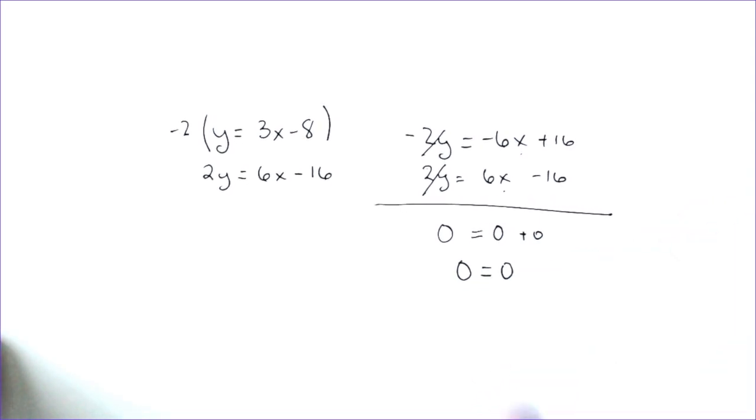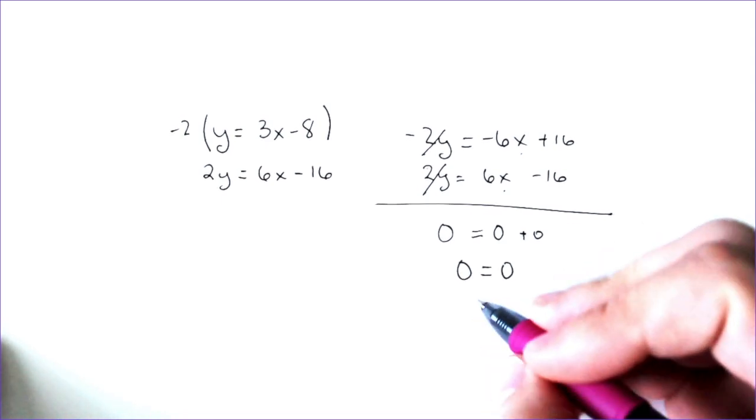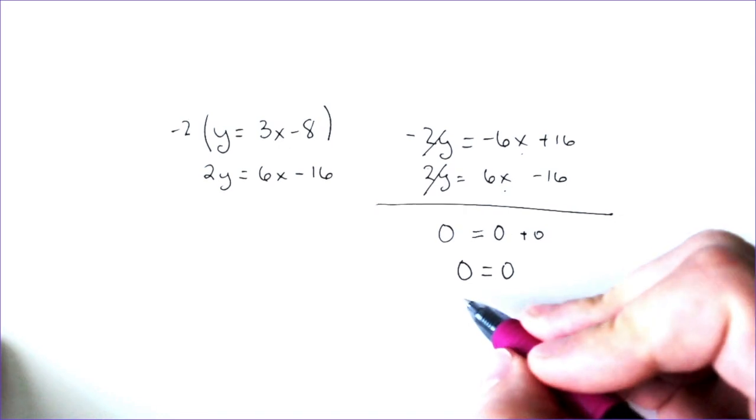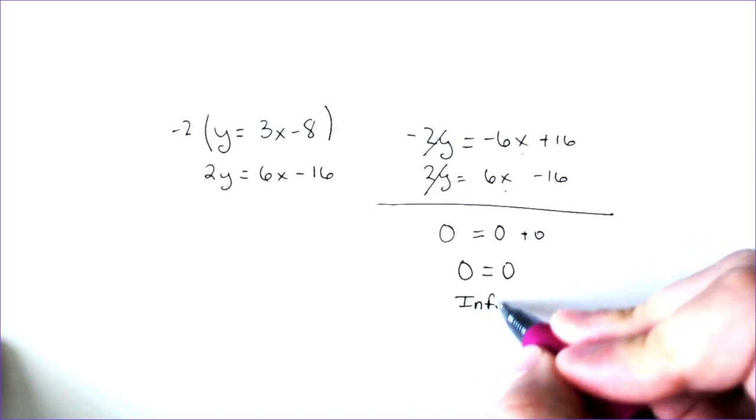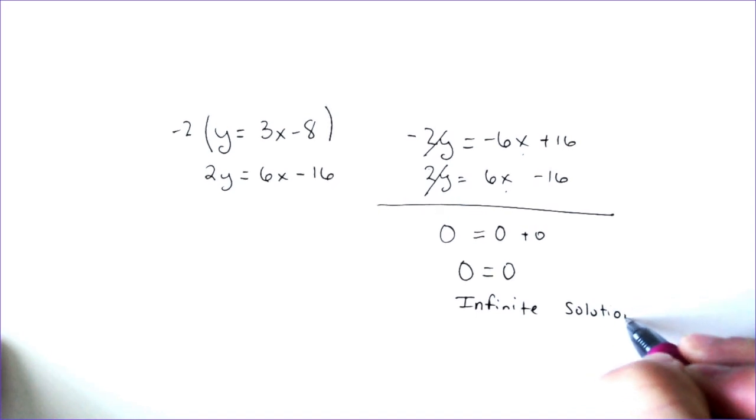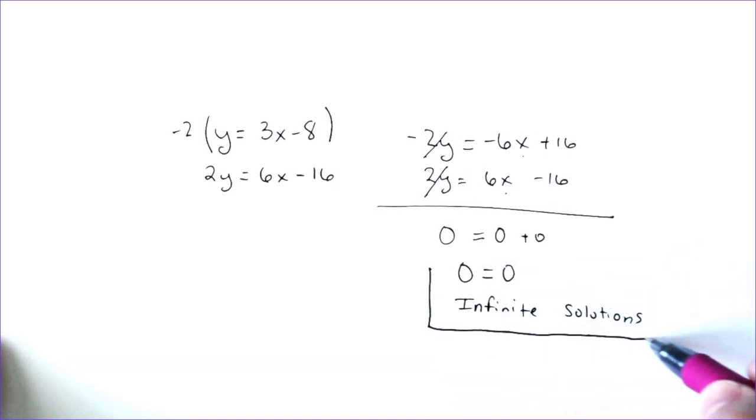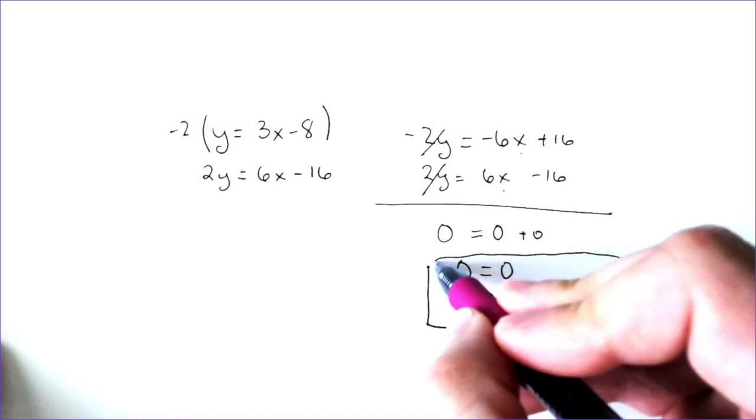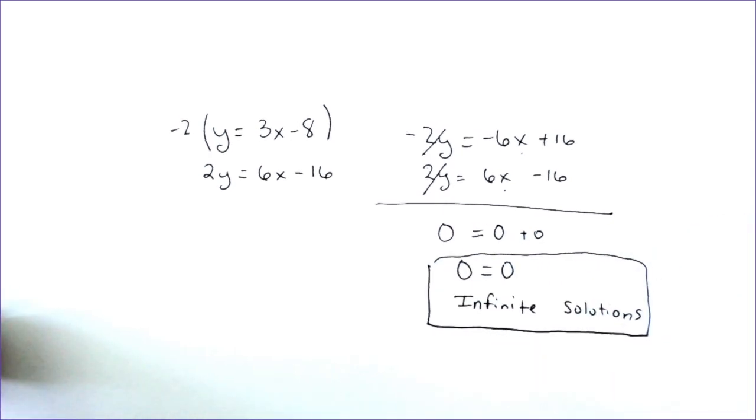And you got to ask yourself, is that a true statement? And the answer to that is yes, that is a true statement. And if it is something like zero equals zero, that is infinite solutions. So the way that you get infinite solutions is if you get zero equals zero predominantly, or you could also get 2 equals 2, 5 equals 5, 3 equals 3, or any number equaling any other number that is the same, you have infinite solutions.